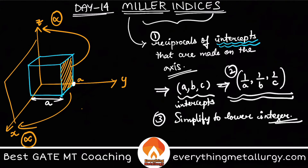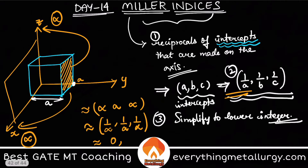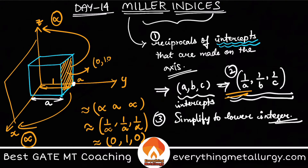So the intercepts are: infinity on x, 'a' on y, and infinity on z. Now reciprocating: 1/infinity, 1/a, 1/infinity — which gives 0, 1/a, 0. Simplifying, since 'a' is taken as 1 in the unit cell, 1/a becomes 1. So this particular plane is (0 1 0).